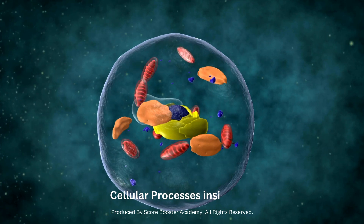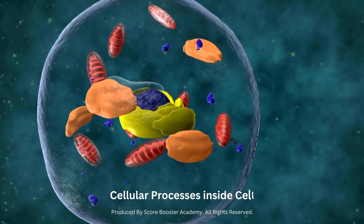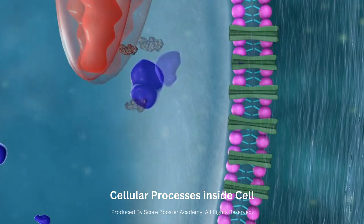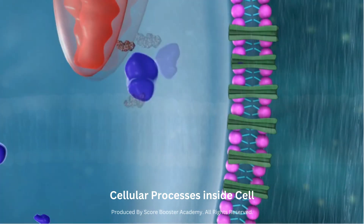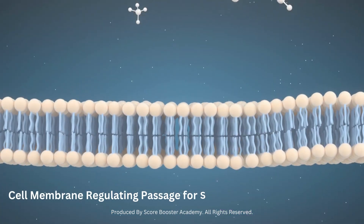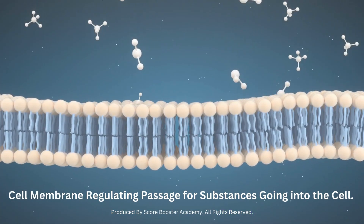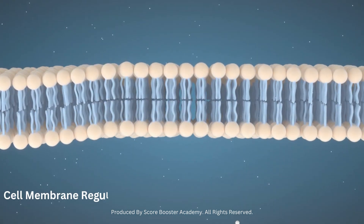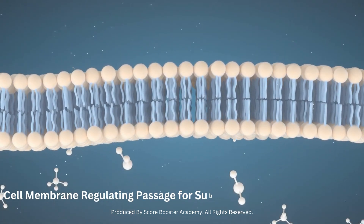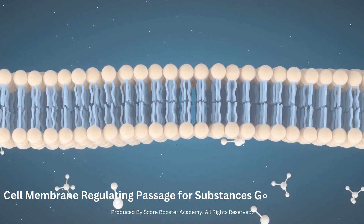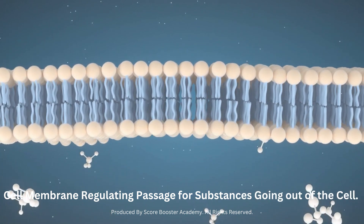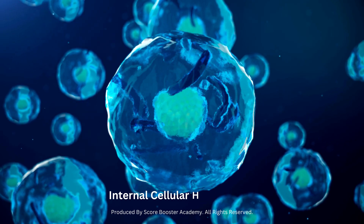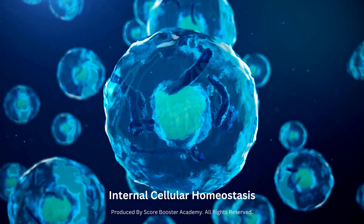Now let's dive into some important functions of the cell membrane. One of the most important functions of the cell membrane is to regulate the passage of substances into and out of the cell. It is selectively permeable, meaning it allows certain molecules and ions to pass through while preventing the passage of others. This process is crucial for maintaining internal cellular homeostasis.